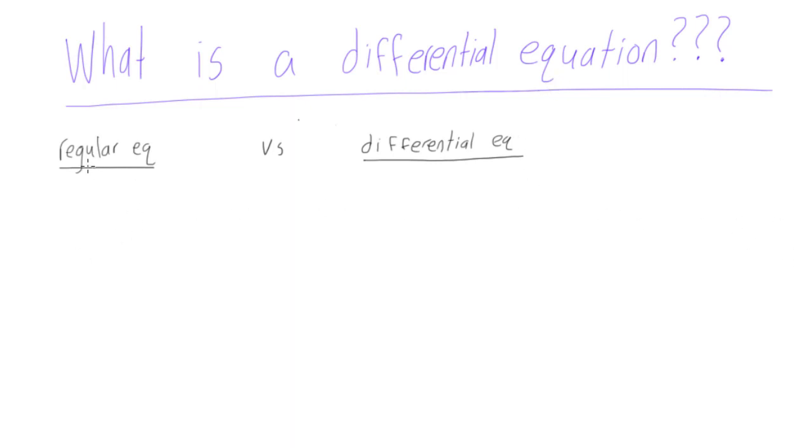First of all, we'll compare it with a regular equation, which is something you're probably used to by now. Something simple like 3x plus 4 is equal to 7. Now, to solve a regular equation, we just want to solve for the variables. The solution to this equation is x is equal to 1. That's the solution to a regular equation.